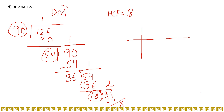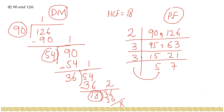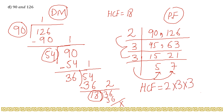Now for part (d) using prime factorization with 90 and 126: starting with 2, then 3. We get 90 = 2 × 3 × 3 × 5 and 126 = 2 × 3 × 3 × 7. There is no common divisor for 5 and 7, so we stop. The HCF is 2 × 3 × 3 = 18. Both methods give the same answer, confirming HCF of 90 and 126 is 18.